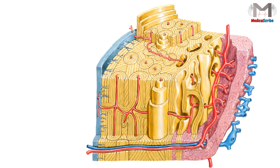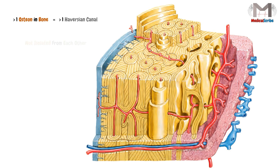Now, I want you to imagine this. We know that there is more than one osteocyte in the bone. This means there is more than one Haversian Canal. These Haversian Canals, of course, are not isolated from each other. There are connections between them.